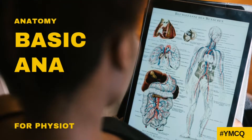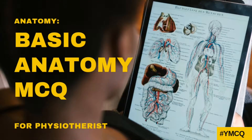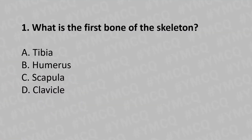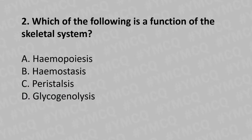Hello, welcome to today's topic: Basic Anatomy MCQ. Moving to our first question: What is the first bone of the skeleton? Option A: tibia, Option B: humerus, Option C: scapula, Option D: clavicle. The answer is Option D: clavicle.